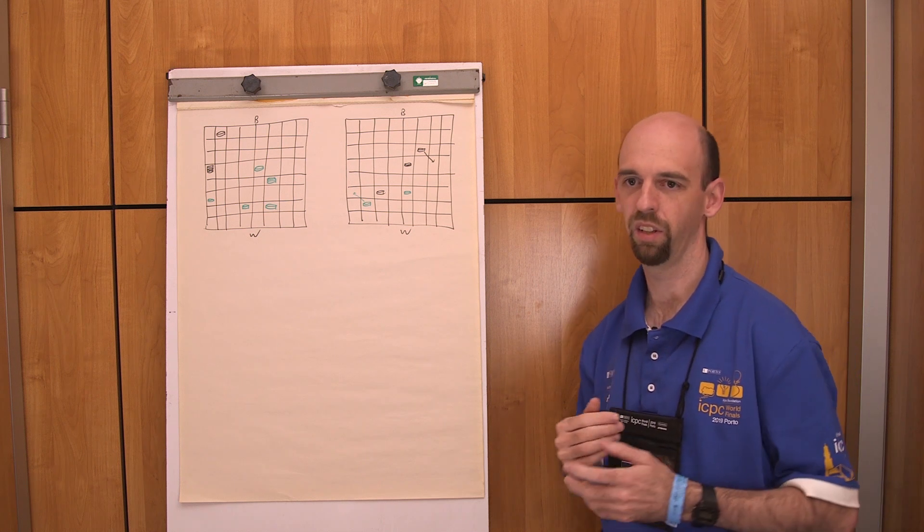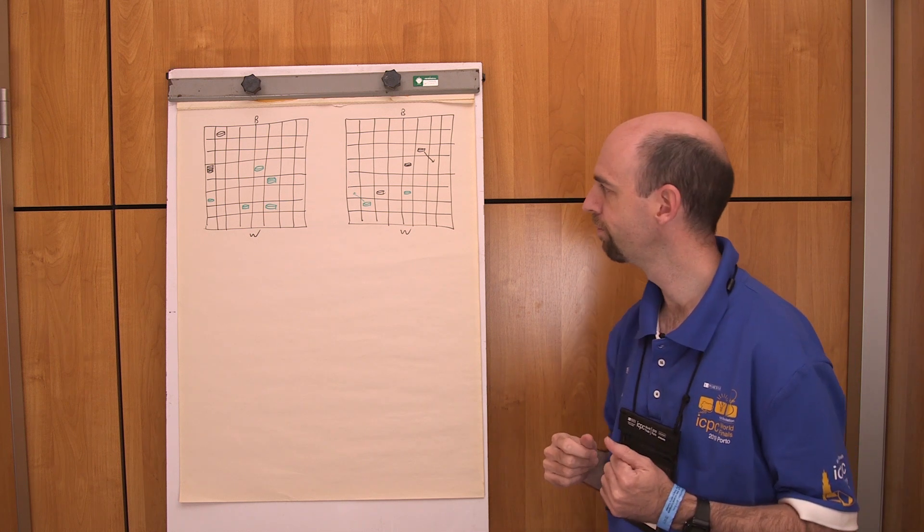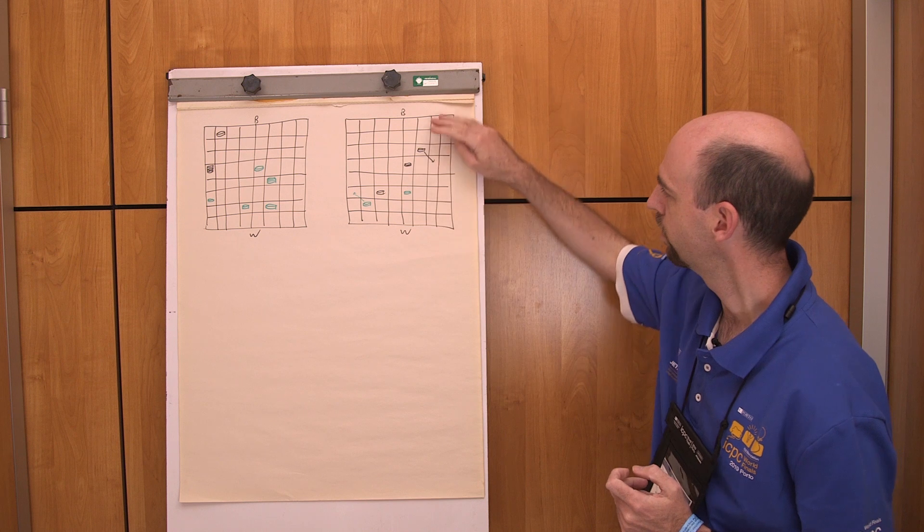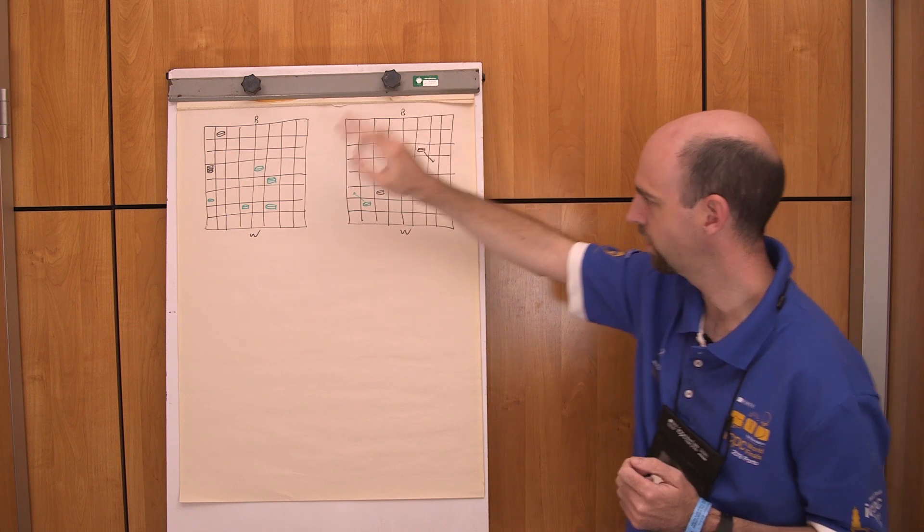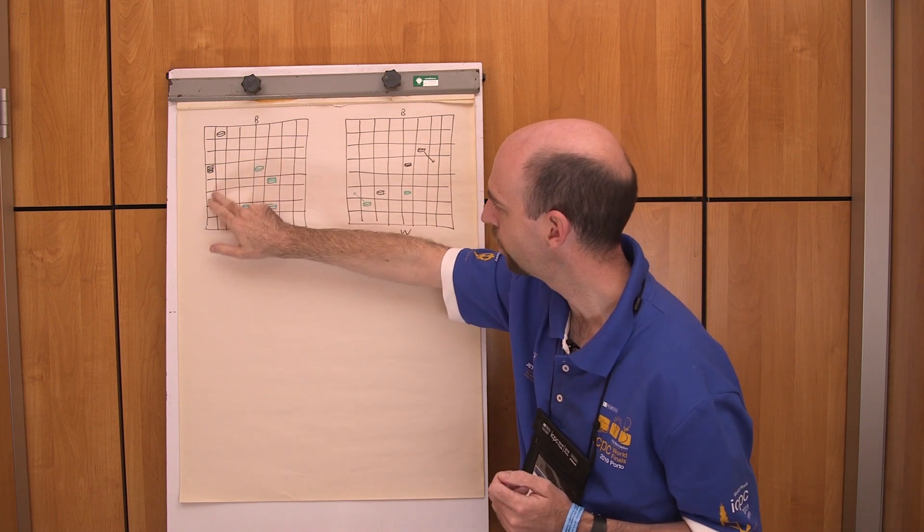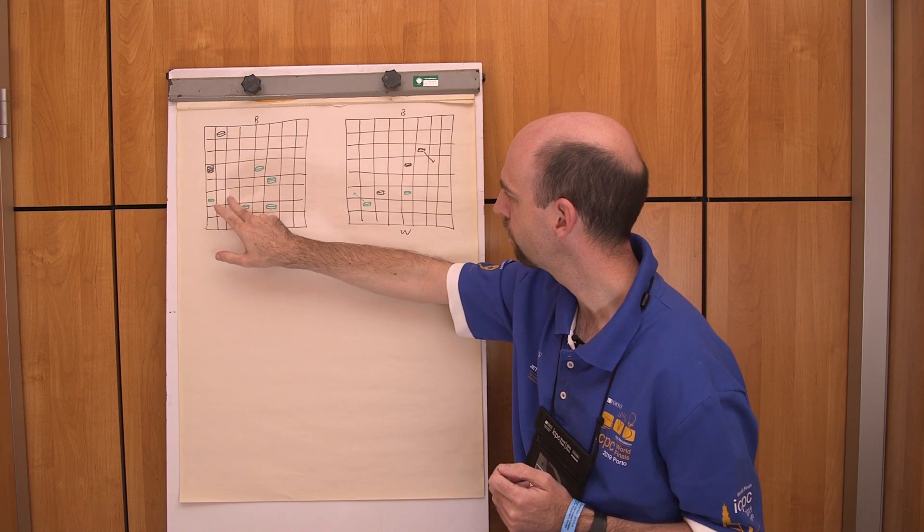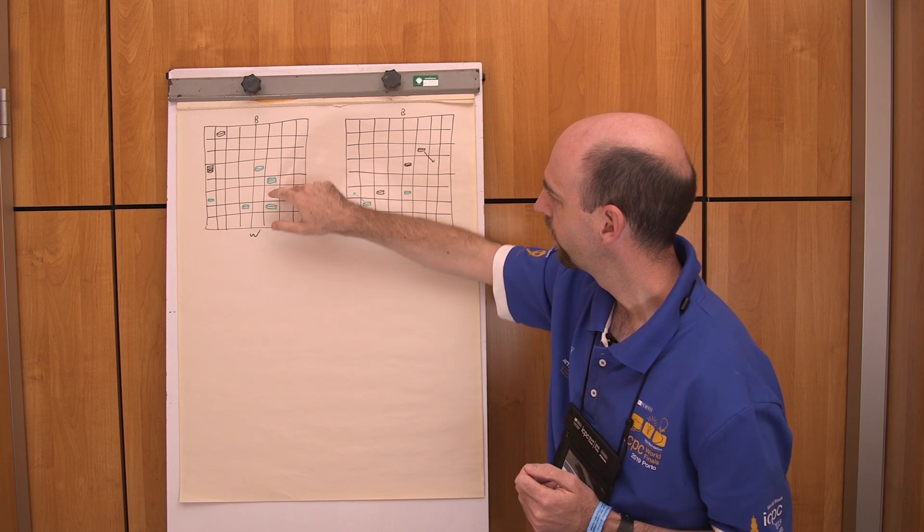The catch is this rule about forced jumps. So in this example, let's say the first move was that black moved there. Well, let's actually start from this example first. Let's say white moved there, black went jump, jump, jump.